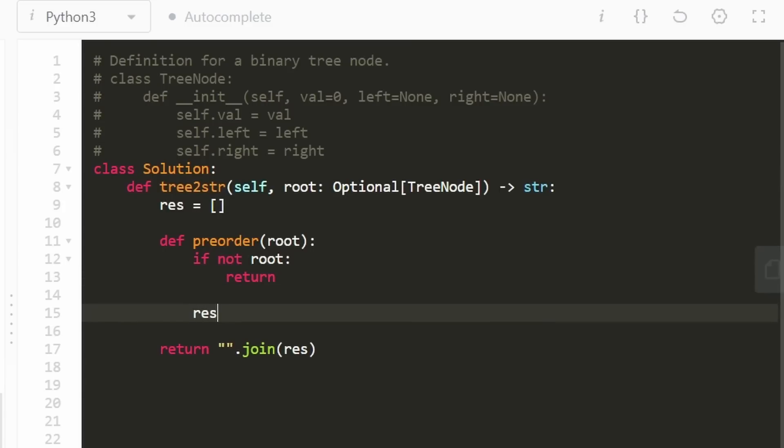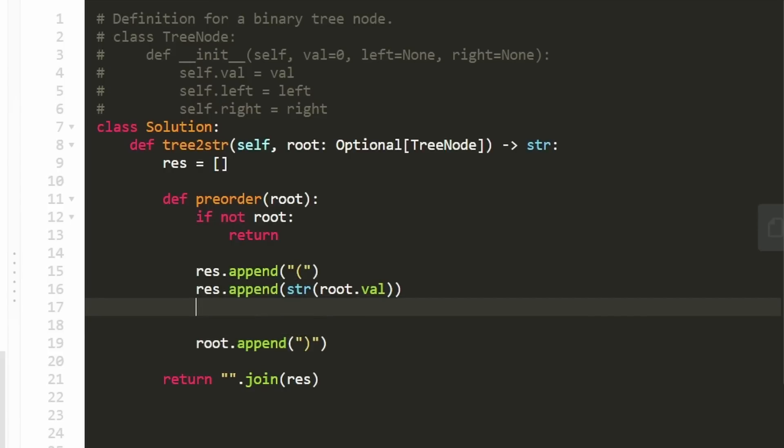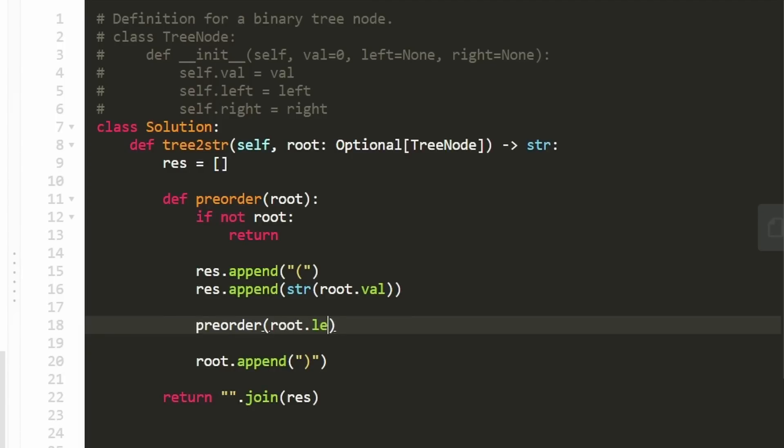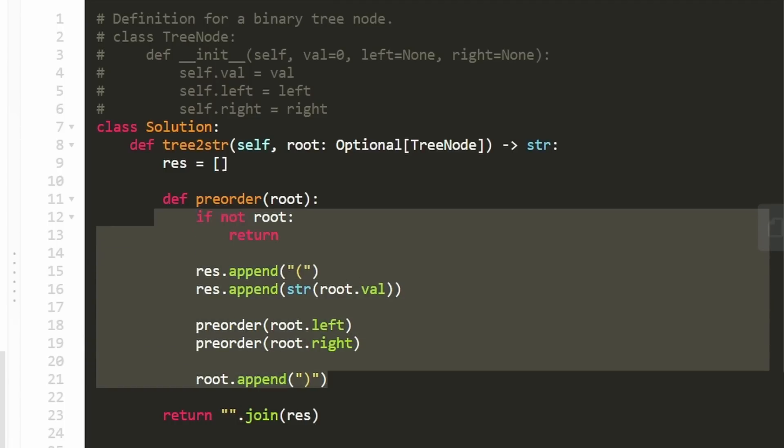Then what I'm going to do is we know when we're given any node value that's non-null, we want to add an opening parentheses. And then we're allowed to add that value itself. Remember, the value is going to be an integer, so we want to convert it to a string. So we can take root.val and convert it to a string. And then before we append that closing parentheses, before we do that, we'd have to also run pre-order traversal on the left and right subtree. So we're going to run preorder root.left, preorder root.right. And it's as easy as that. But believe it or not, there are some issues with this code.